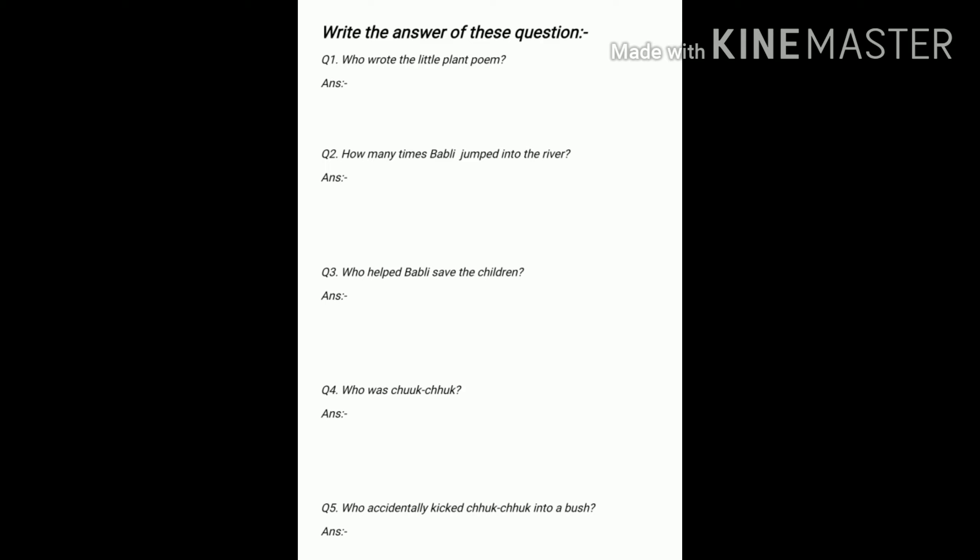The first question is: who wrote the little plant poem? Second: how many times did bubbly jump into the river? Third: who helped bubbly save the children? Fourth: who was chuk chuk? Fifth: who accidentally kicked chuk chuk into a bush? So these are the questions.